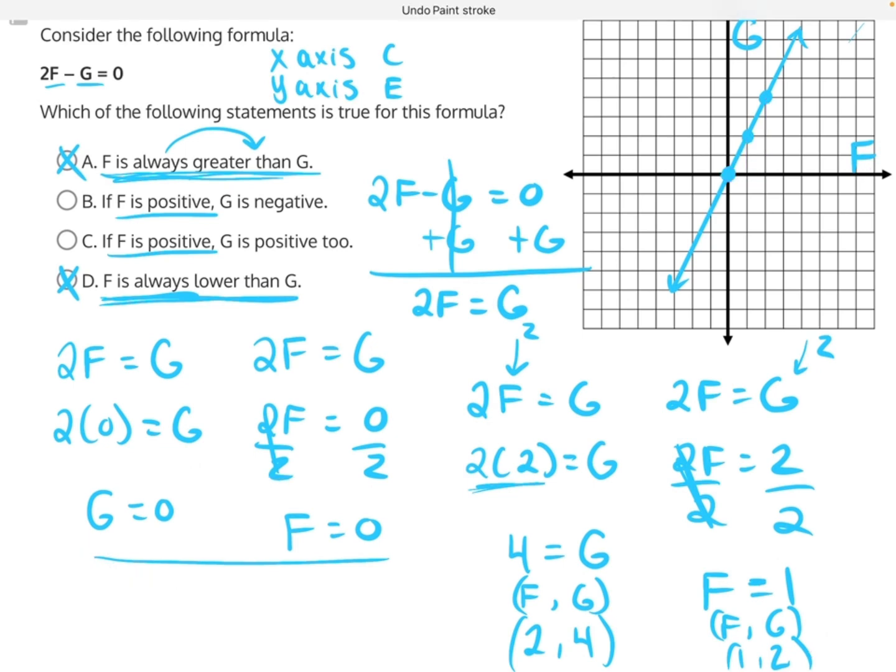And now we can use this graph to help us figure out which answer is correct. Is it B or C? B says if F is positive, G is negative. Well, let's take a look at the quadrants where we have values from this graph. We have values in quadrant one, where both F and G are positive.